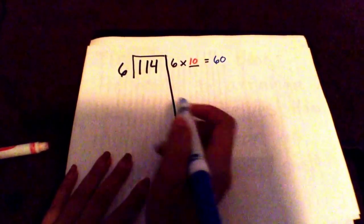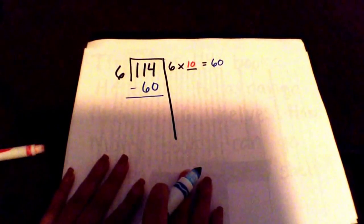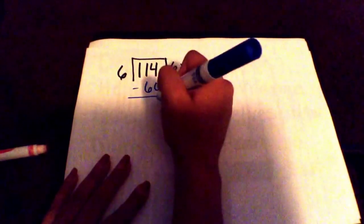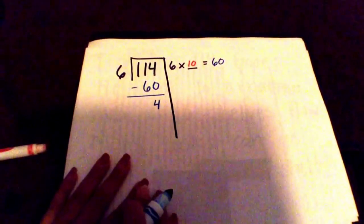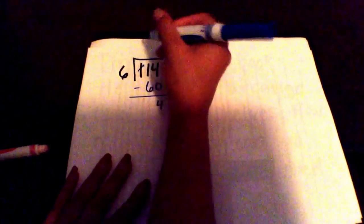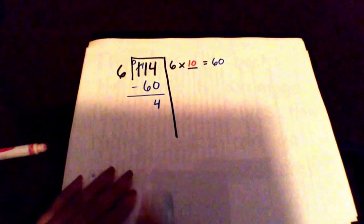I'm going to take away that partial quotient, or partial product, and subtract it from the total. Four minus zero is four. I cannot take away 6 from 1, so I'm going to borrow from my neighbor and turn it into 11. Eleven minus 6 is 5.